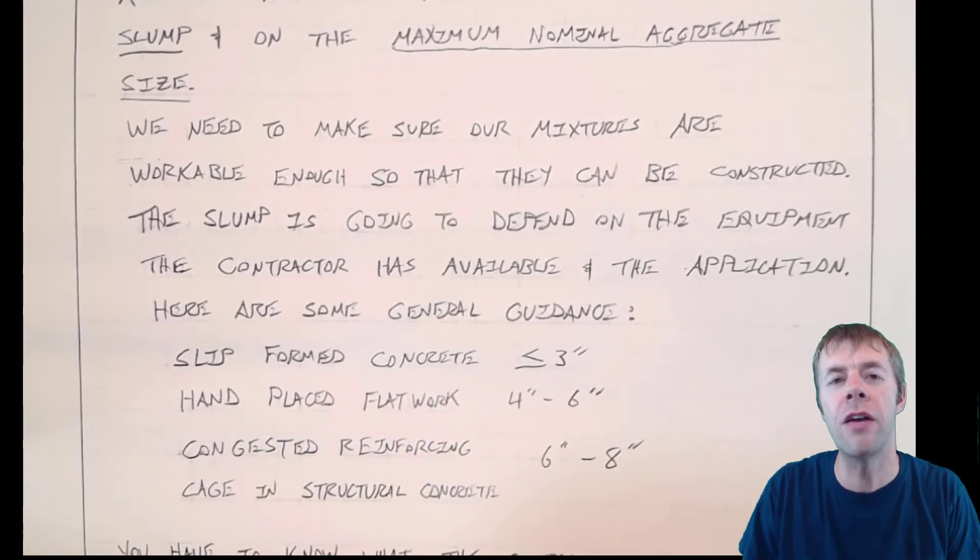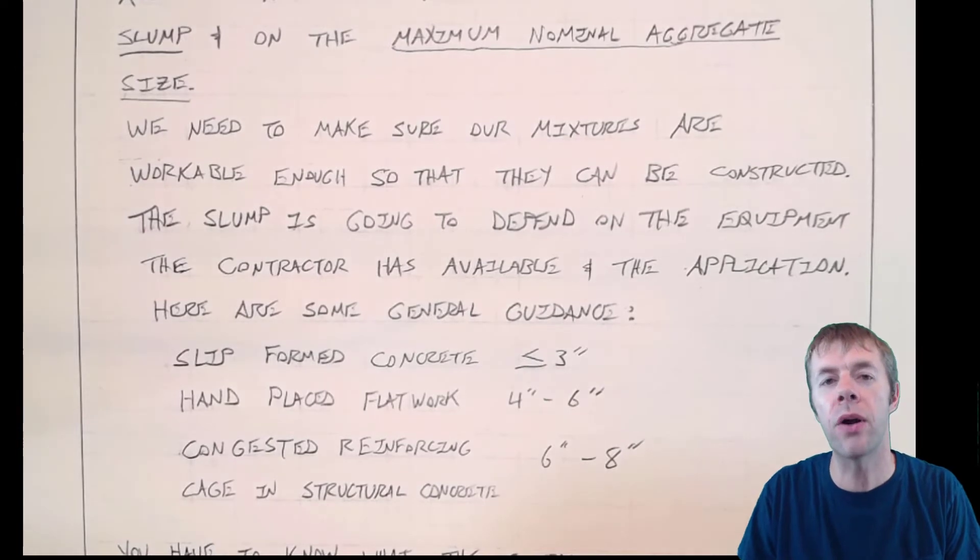Typically slip form concrete is usually less than three inches of slump. Slip form concrete is like a pavement or sometimes barrier wall. Sometimes they'll slip form pipe. And in those cases you might have very, very low slumps.